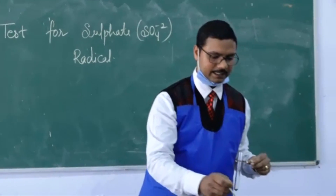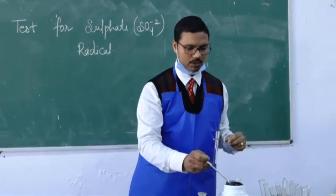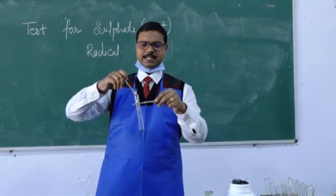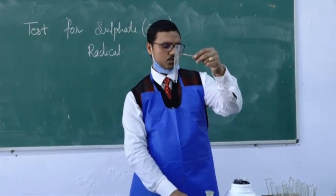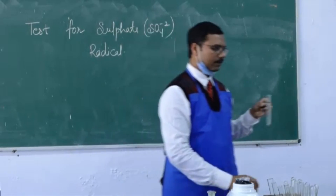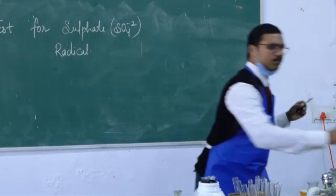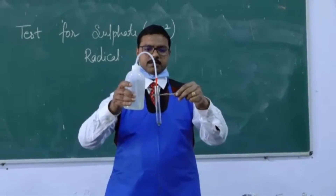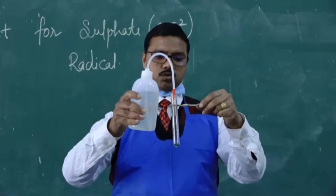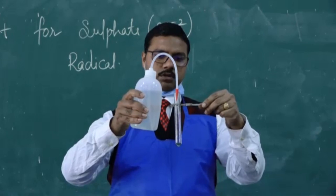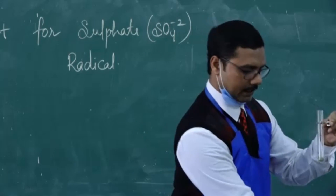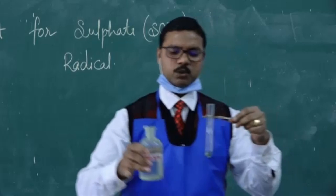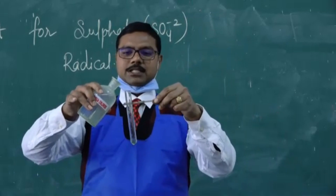First of all, take the sulfate salt in a very small amount. I have just taken a pinch of sulfate salt into a test tube, and after that take a small amount of water — just 2 or 3 drops — into it. Then take barium fluoride and mix it in.